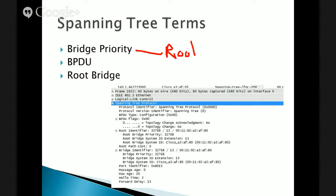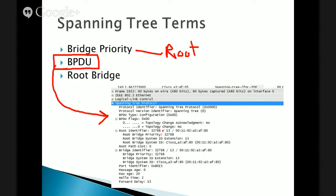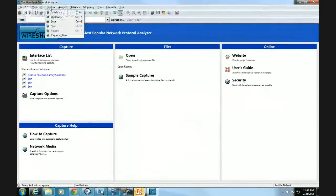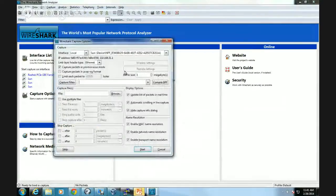There are some concepts with spanning tree I want you to understand. Bridge priority — the bridge with the lowest priority becomes the root bridge. So bridge priority determines who's the root. The type of information distributed by the switches is called the Bridge Protocol Data Unit, or BPDU. Here's a little capture of a BPDU — it's a spanning tree protocol packet, and you'll see there's information about the root and the hello interval. This is constantly happening on your network.